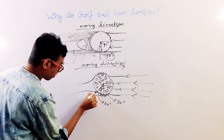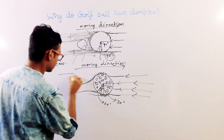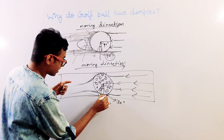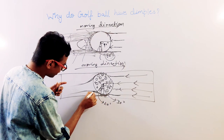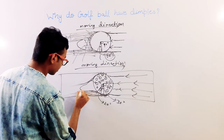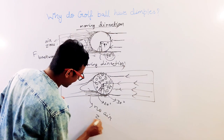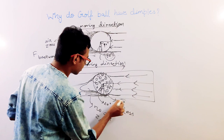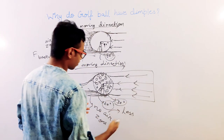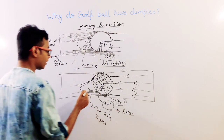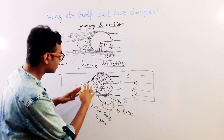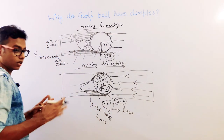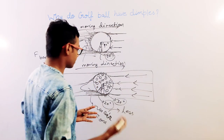So the benefit of turbulence is this: because the flow remains attached 20 degrees further downstream, the no-air zone behind the ball is smaller in the dimpled case compared to the smooth ball. The difference is not negligible — it is significant. That is why dimples are beneficial for a golf ball. The no-air zone is less in the case of a golf ball with dimples.